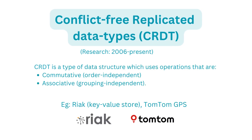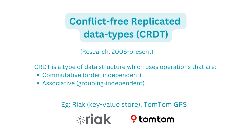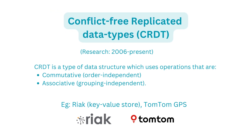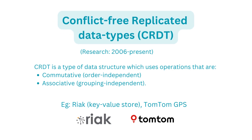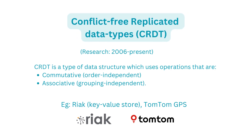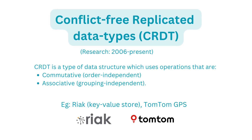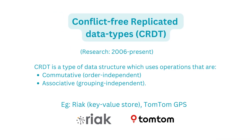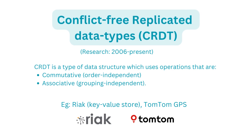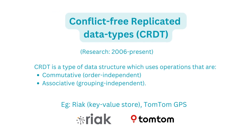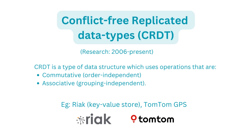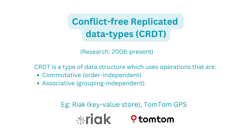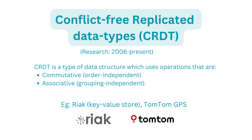To overcome OT's limitations, researchers around 2006 introduced Conflict-free Replicated Data Types, or CRDTs. This is a type of data structure that uses operations that are commutative (order-independent) and associative (grouping-independent). Instead of writing complex transformation functions, this data structure requires that operations be designed to support commutative and associative properties, so that when operations are applied in different orders, they produce the same final result, keeping state consistent across all replicas.